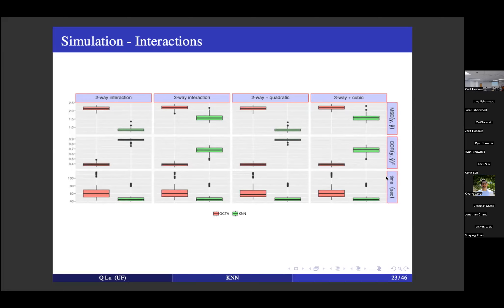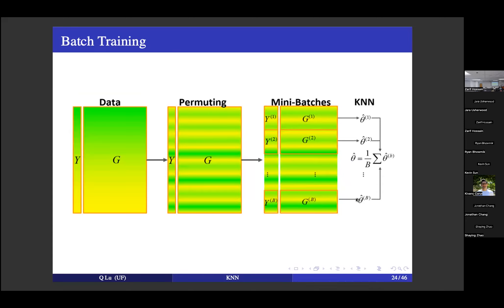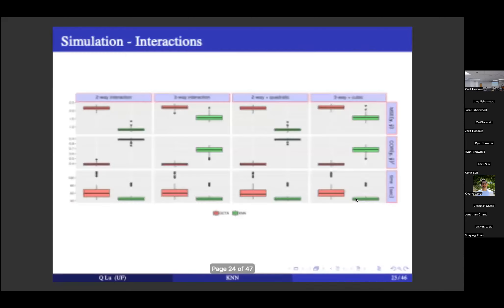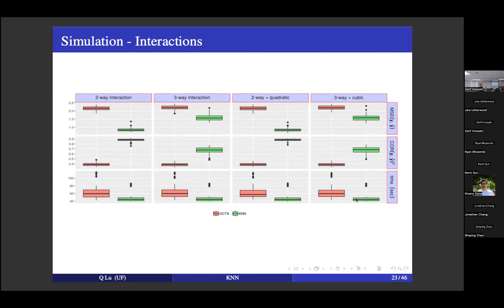Simulation two considered interaction effects by introducing two-way interaction, three-way interaction, and additional quadratic and cubic terms. As expected, KNN outperformed the linear mixed model in prediction error, correlation, and computational time. Question: When you say interaction, do you mean interaction across SNPs? Yes — in the simulation we added cross products representing pairwise and three-way interaction effects among SNPs, not only main effects.